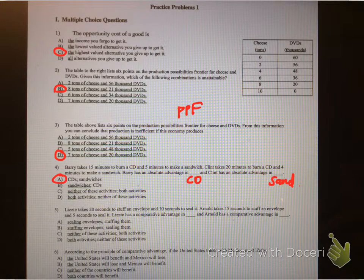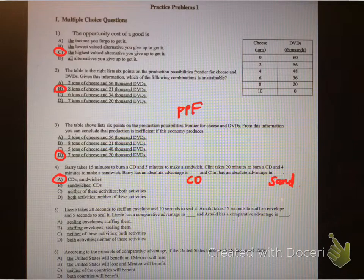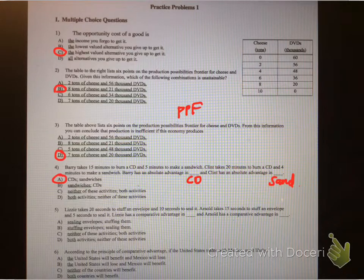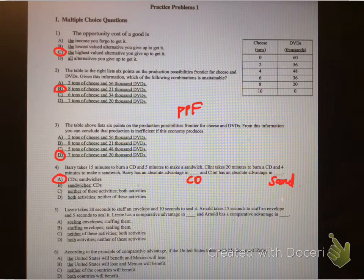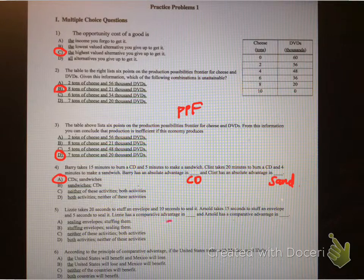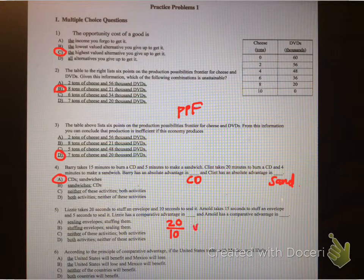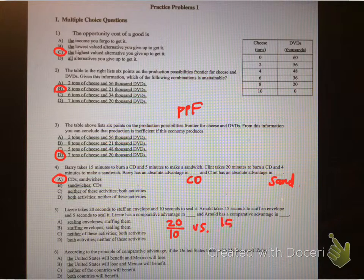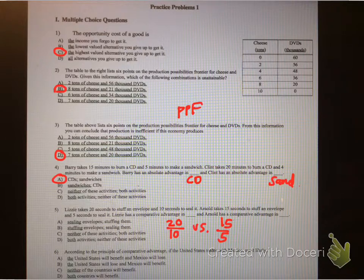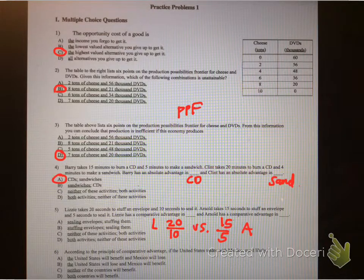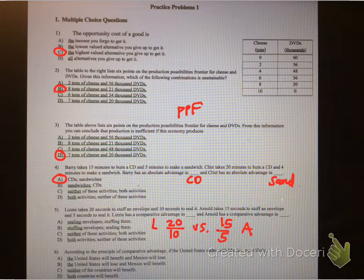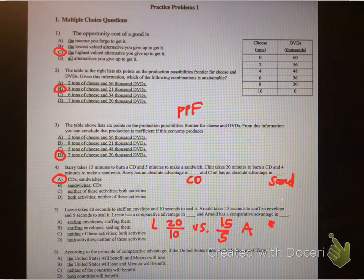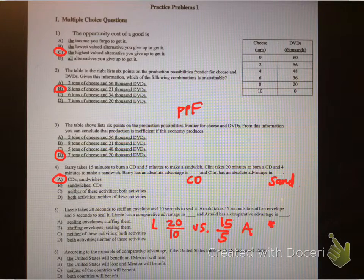Okay. Lizzy takes 20 seconds to stuff an envelope and 10 seconds to seal it. Arnold takes 15 seconds to stuff an envelope and 5 seconds to seal it. Lizzy has a comparative advantage in what? Well, let's take a look at this here. The ratio would be 20 seconds to 10 seconds versus 15 seconds and 5 seconds. So this is Lizzy and this is Arnold. So whoever has the smallest ratio has the comparative advantage. So that means Lizzy would have a comparative advantage in stuffing envelopes, right? And Arnold would have a comparative advantage in sealing them.